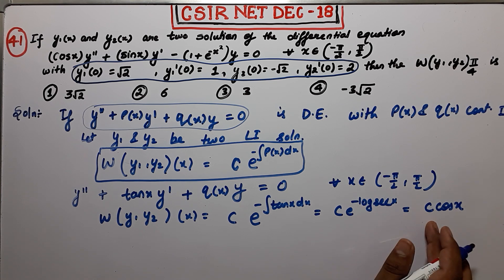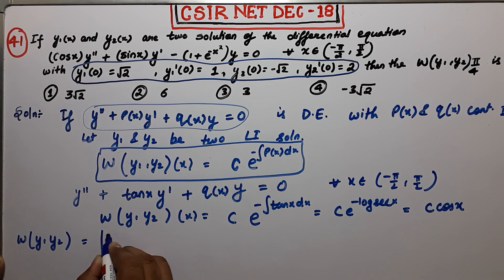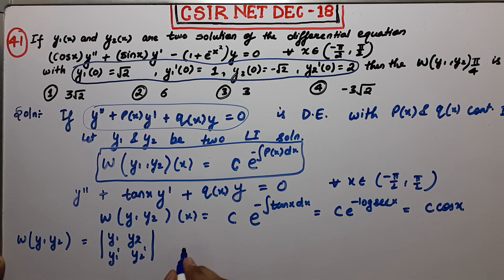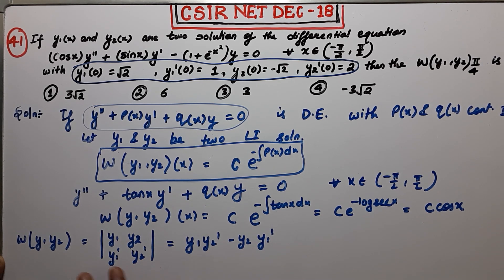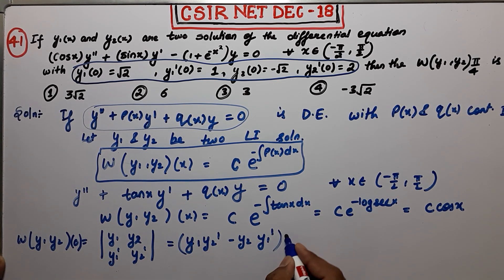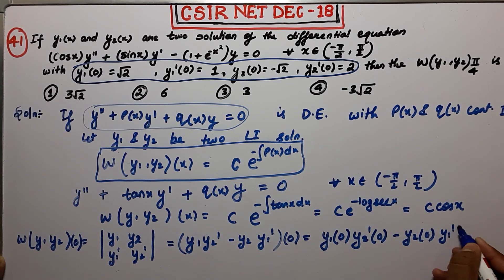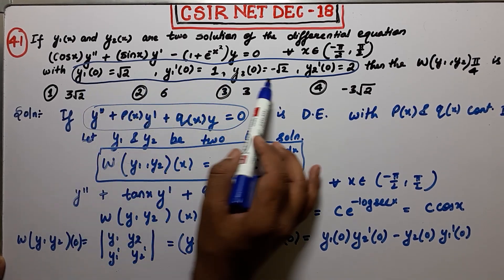The general formula for the Wronskian of two functions is W(y1, y2) = y1·y2' - y2·y1'. I will evaluate this Wronskian at x = 0, because the four conditions we have are evaluated at zero — that's why I'm evaluating the Wronskian at zero.